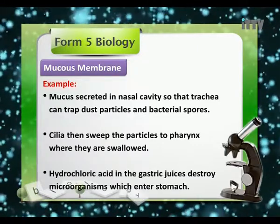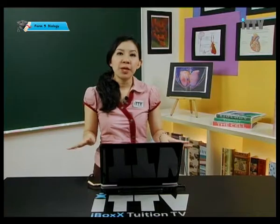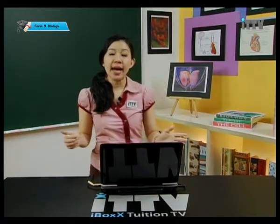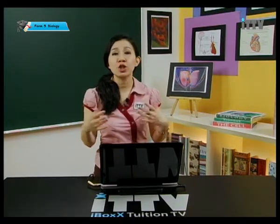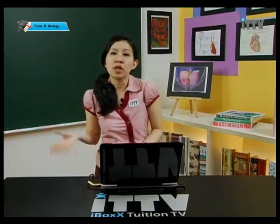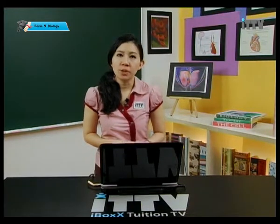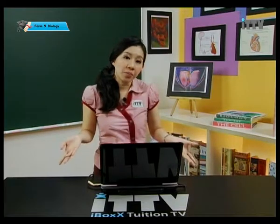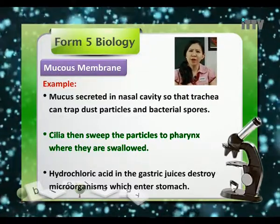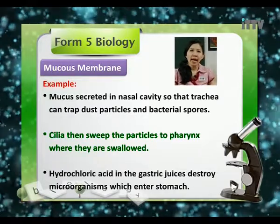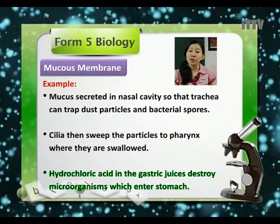Hydrochloric acid in the gastric juices destroys microorganisms which enter the stomach. The mucous membrane is our first line of defense because it lines the respiratory, digestive, reproductive, and urinary tracts, secreting mucus to trap dust particles and bacterial spores that are potentially detrimental to our health. We also have cilia lining the respiratory tract to sweep all these particles to the pharynx where we swallow them, and hydrochloric acid in our stomach to destroy microorganisms that have entered.